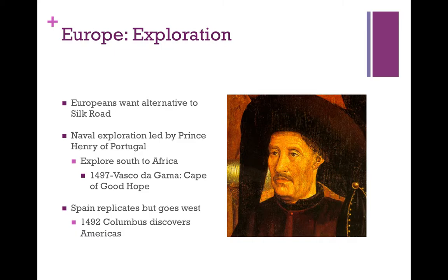Two countries lead the charge here. Portugal, under Prince Henry the Navigator, will push sailors to sail south and eventually go beyond the Cape of Good Hope in 1497 and reach the Indian Ocean and take part in the trade routes there — that was Vasco de Gama who did that. Then Spain will send Christopher Columbus westward — actually, Columbus himself decides he wants to go westward.